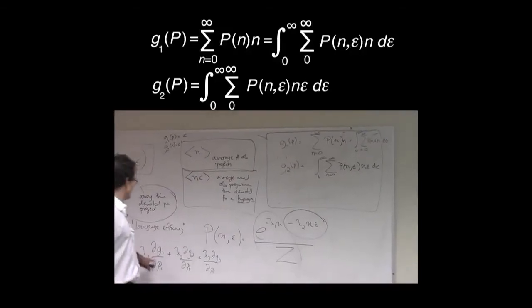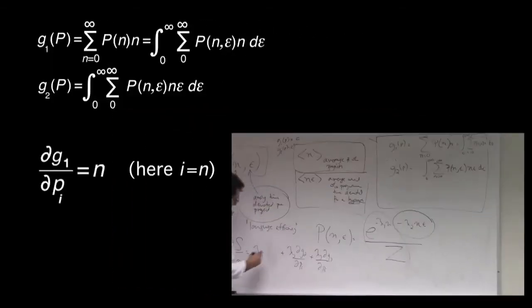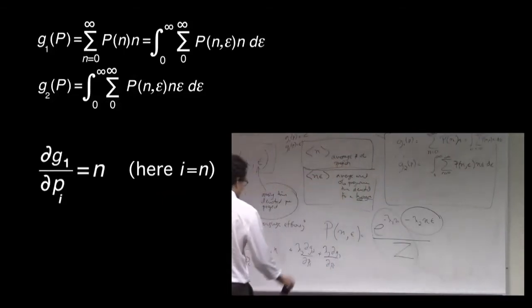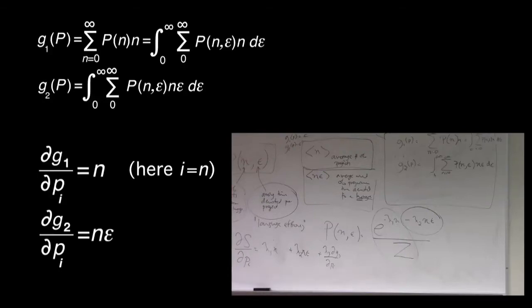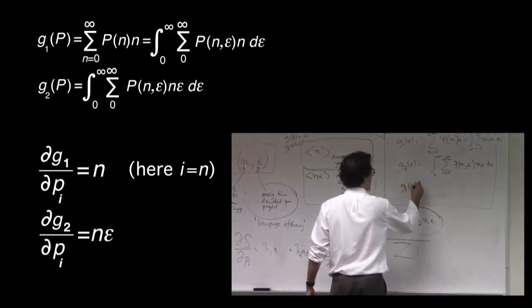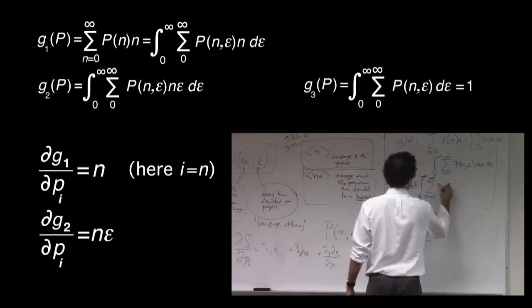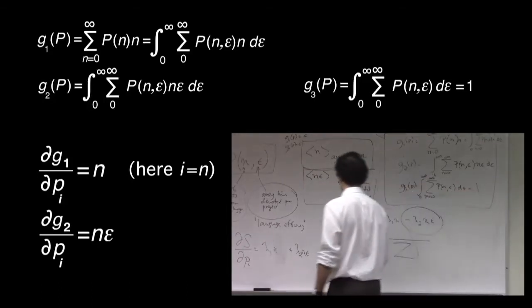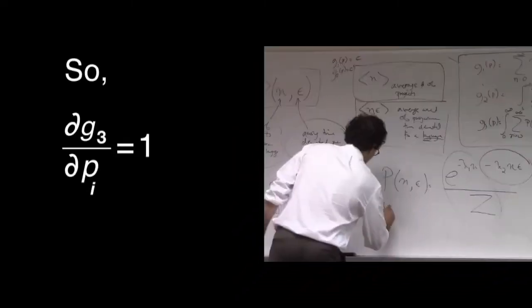So now when we take the derivative of g1 with respect to p1, when we know what that looks like, that looks like lambda 1 times n. And when we take the derivative of this here with respect to pi, everything comes out except for lambda 2 and epsilon. And finally g3 is just a constraint on the overall normalization. It says that when I integrate over all epsilon and I sum over all n, that's equal to 1. So when I take the derivative of this here with respect to p, I get lambda 3 times unity.